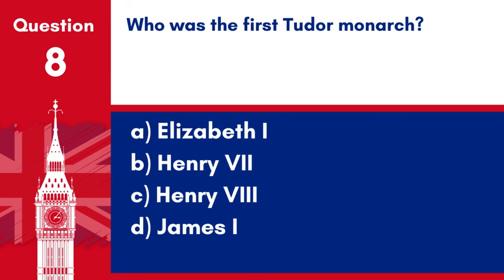Question 8. Who was the first Tudor monarch? A. Elizabeth I. B. Henry VII. C. Henry VIII. D. James I. Answer: B. Henry VII. The first Tudor monarch was Henry VII.